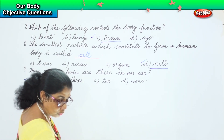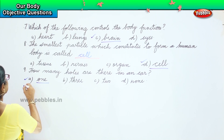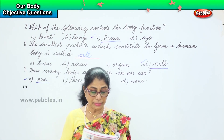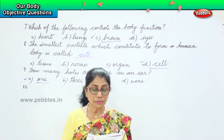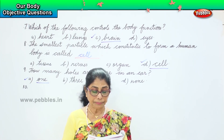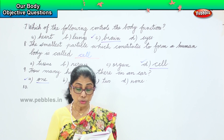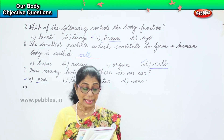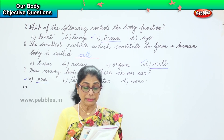Question ten: I am two in number. I help myself to hear the loud noise of aeroplanes as well as the soft sound of birds. Guess who am I?